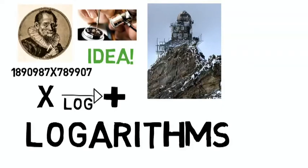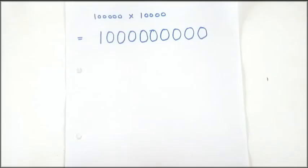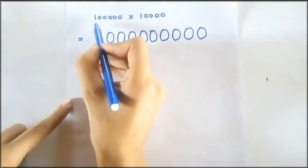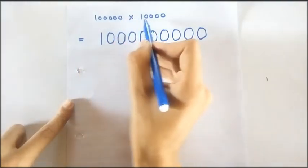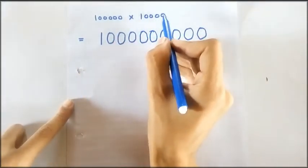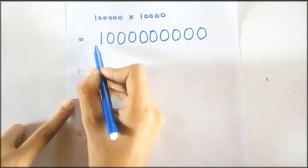So let's see how logarithms work. And for understanding log, let's look at the example we did at the start. That was 1 followed by 5 zeros and 1 followed by 4 zeros is equal to 1 followed by 9 zeros.